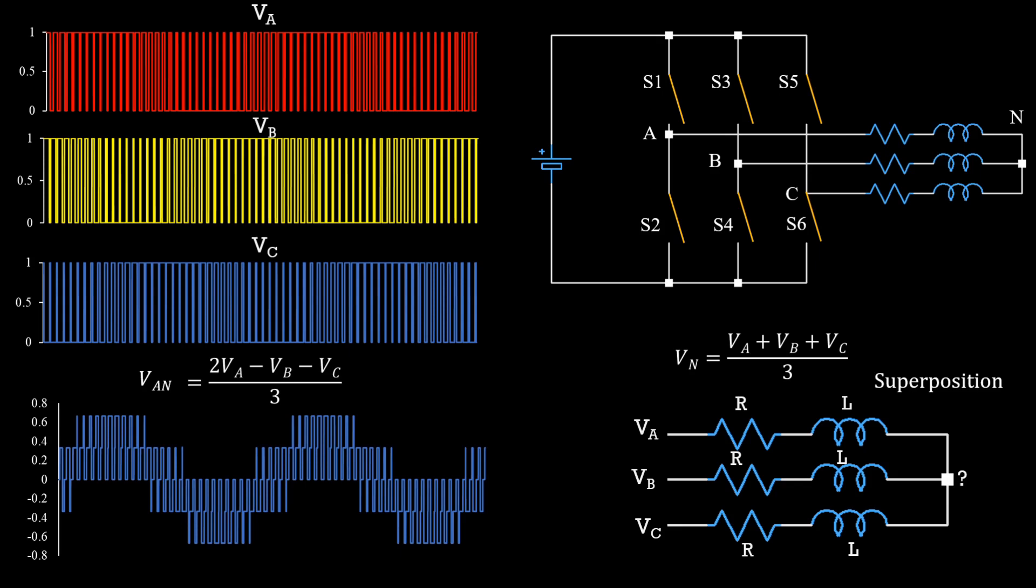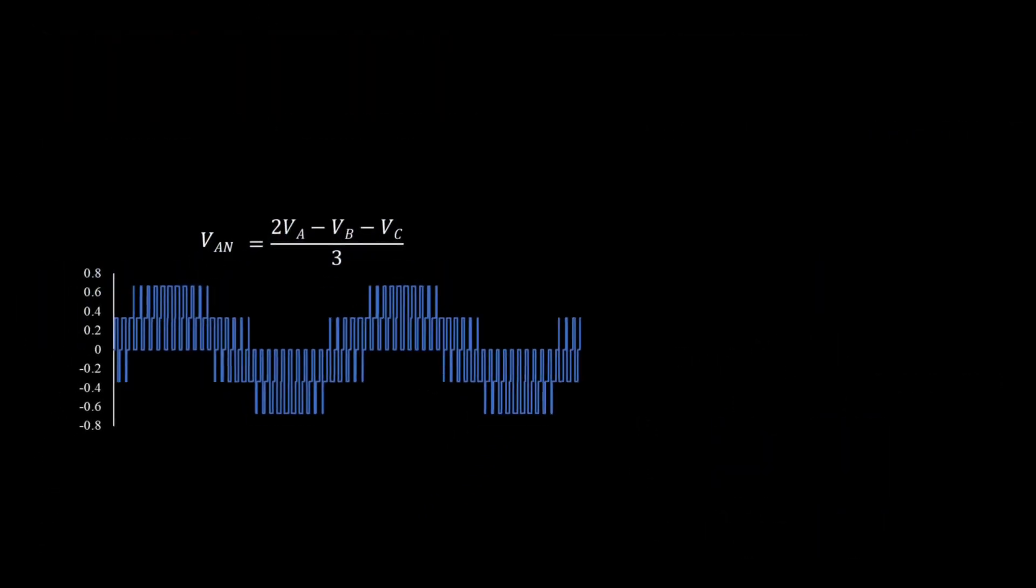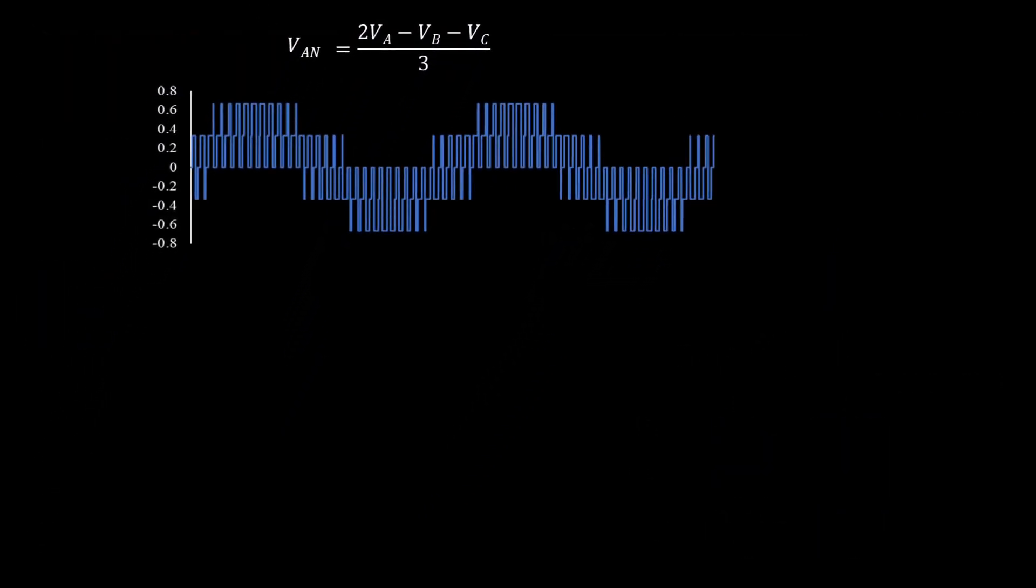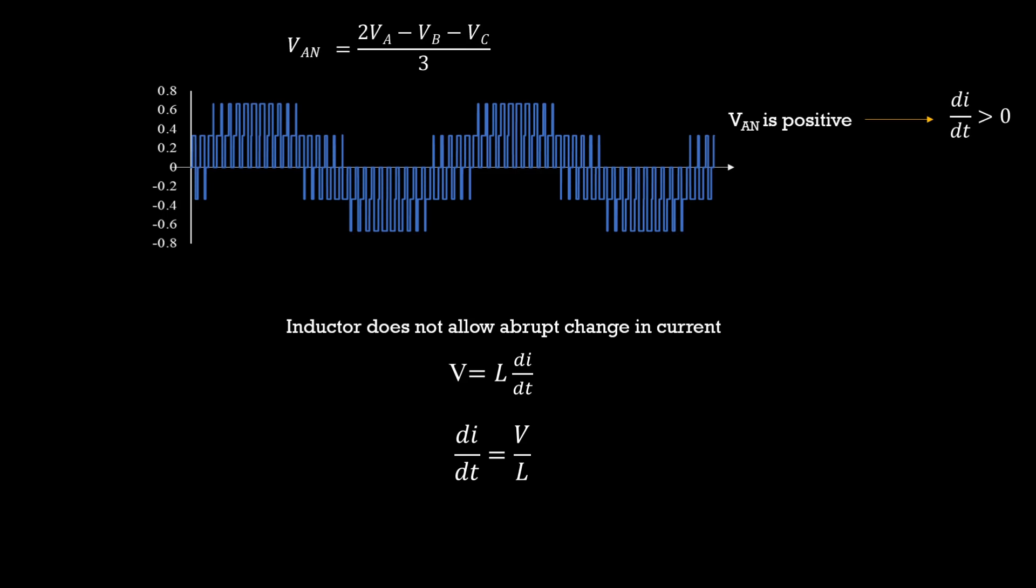Now, we can apply basic circuit theory to find the current flowing in the windings but we are not solving any mathematical equations here. Rather, we will get some idea about the current through intuitive understanding. We know an inductor will not allow abrupt change in current and we also know voltage across inductor is given by L di/dt or di/dt equal to V/L.